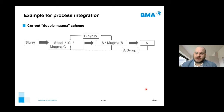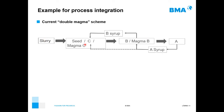In the process integration in the cane industry, the current process is the double magma scheme, where the slurry comes from the C mass — the sugar of C is basically the seed of the B mass, and the sugar of B is the seed for A. The syrup for A goes into B, the syrup of B goes into C, and so on. The first time we used the cooling crystallizer — the Tachito — was with our factory in Honduras called Santa Matilde.